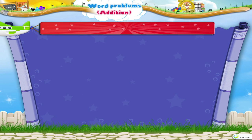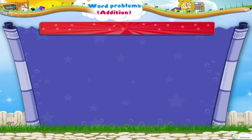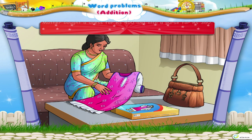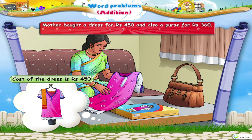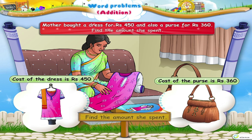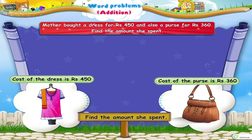Let us see another example. Mother bought a dress for rupees 450 and also a purse for rupees 360. Find the amount she spent.